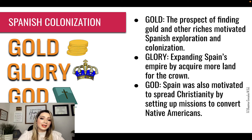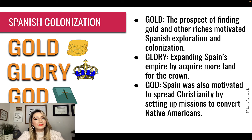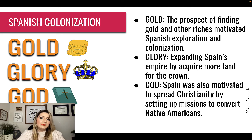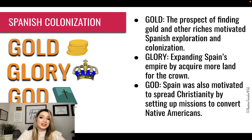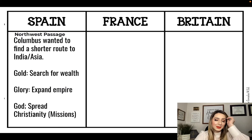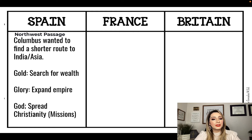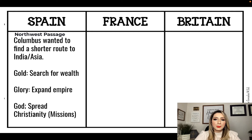Spanish colonization had three main motives: gold, glory, and God. The prospect of finding gold and other riches motivated Spanish exploration and colonization. Glory is the idea of expanding your empire by acquiring more land for the crown. And God — Spain was motivated to spread Christianity by setting up missions to convert Native Americans. On your graphic organizer, under gold write 'search for wealth,' under glory write 'expand empire,' and under God write 'spread Christianity' and put missions in parentheses.